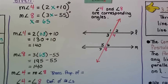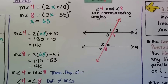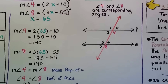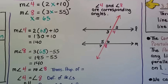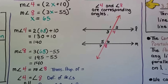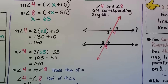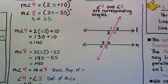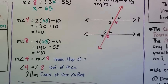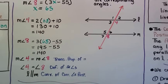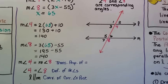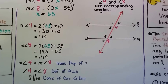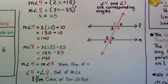We know angles 4 and 8 are corresponding angles from the diagram, so they both should be congruent — and they both are 140. The measure of angle 4 is equal to the measure of angle 8 because of the transitive property of equality. If angle 4 is 140 and they are corresponding angles, then angle 8 equals 140, so they're equal. Angle 4 is congruent to angle 8 by the definition of congruent angles. Therefore, line L is parallel to M because of the Converse of the Corresponding Angles Postulate.